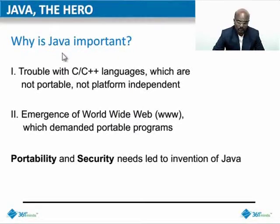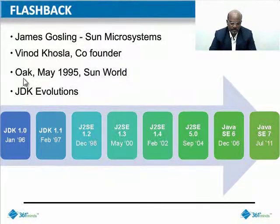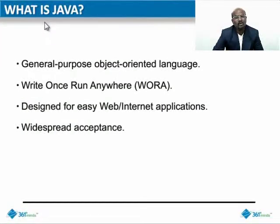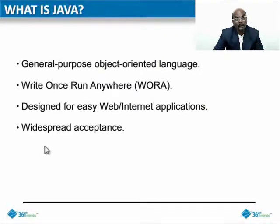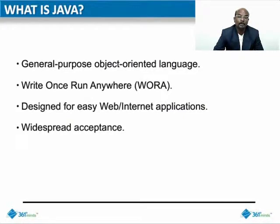Why is Java important? The trouble with C and C++ is that with the emergence of the World Wide Web, it was found by James Gosling from Sun Microsystems, who introduced the first version of Java as JDK. Java is a general-purpose object-oriented language — that's why you say write once and run anywhere. It is designed for easy web and internet applications, has widespread acceptance, and runs on more than 3 billion devices.